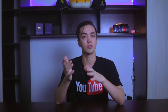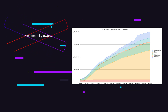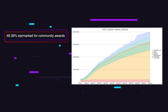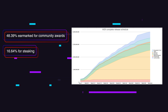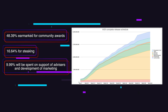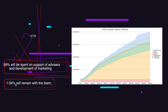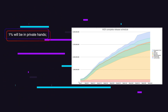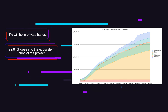Now let's talk about the project token. The main token is AGI, which is distributed as follows: 38.39% in the market for community awards, 16.64% for staking, 9.99% will be spent on support of advisors and development of marketing, 1.94% will remain with the team, 1% will be in private hands, and 24% goes into the ecosystem funds of the project. So we get a balanced token that the entire community will support.